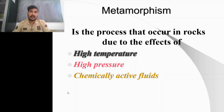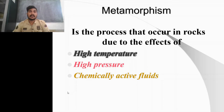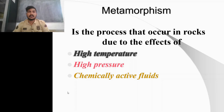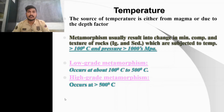Pressure comes from either overburden pressure or from an external source such as a tectonic force. The next agent is chemically active fluids. In most cases there will not be any addition or subtraction from the chemistry, but fluids present inside the rock will act as an agent for metamorphism to occur.